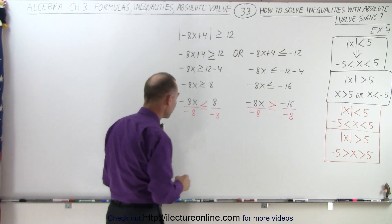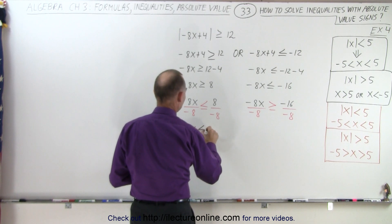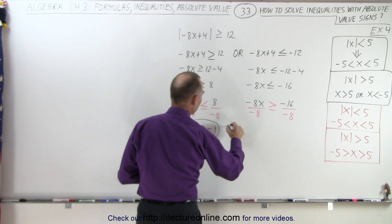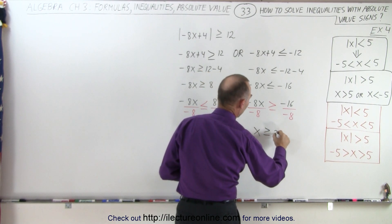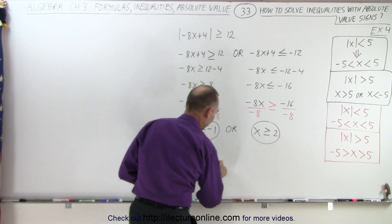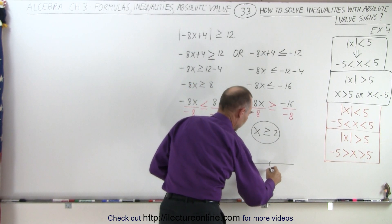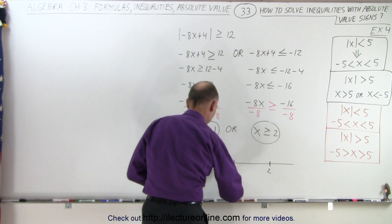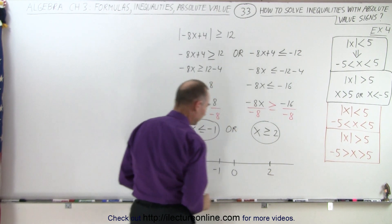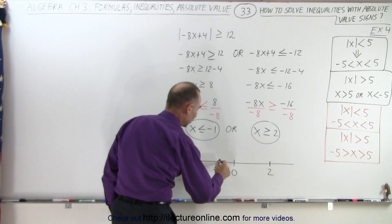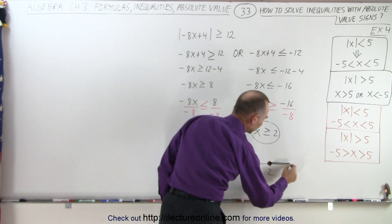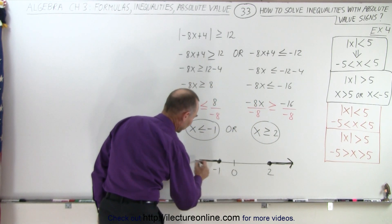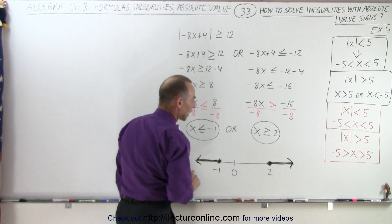So now we can go ahead and simplify. On the left side we have x is less than or equal to negative 1, or — because it's an or condition — over here we get x is greater than or equal to positive 2. And then if we were to graph that, we have positive 2, 0, and negative 1. Notice that it does include the endpoints, so we include negative 1 and positive 2. Anything greater than positive 2 goes to the right, and anything less than negative 1 goes to the left. And that's how we solve that.